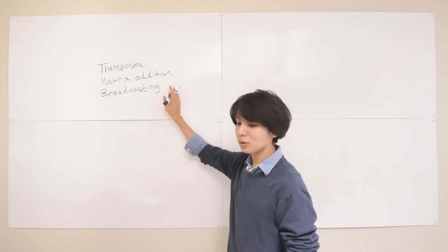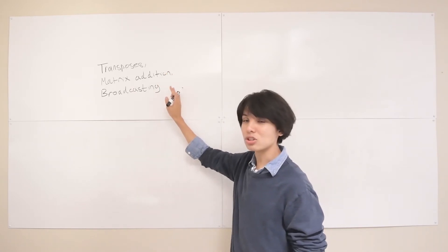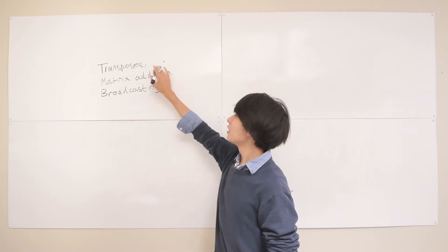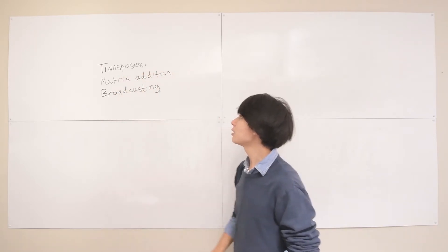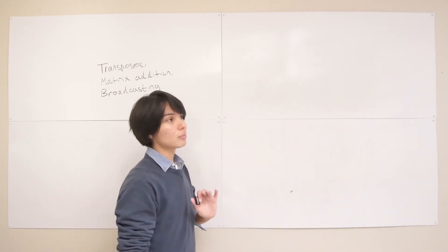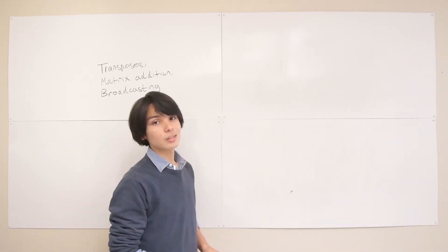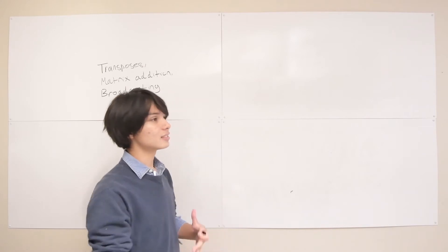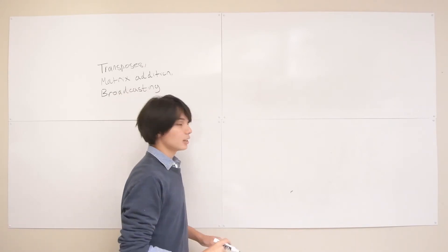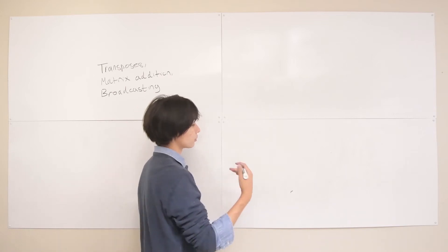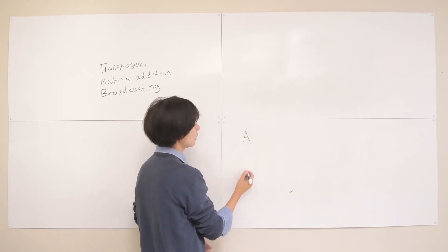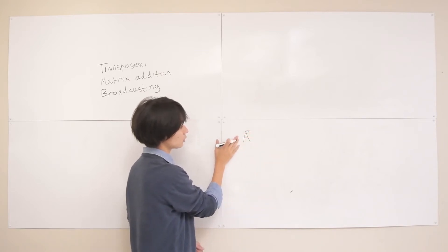This accompanies chapter 2.1 in the deep learning textbook that this course goes with. So let's start with transposes. The transpose is something we can do on matrices, vectors, and scalars — and technically tensors, but that's a bit complicated so we won't talk about that today. For matrices, which is the most common case, the transpose of matrix A is written as A transpose.